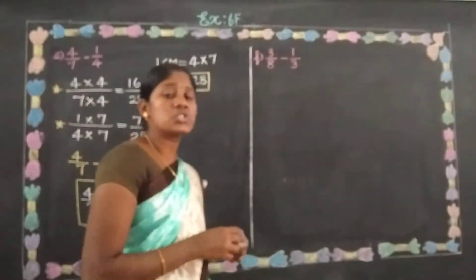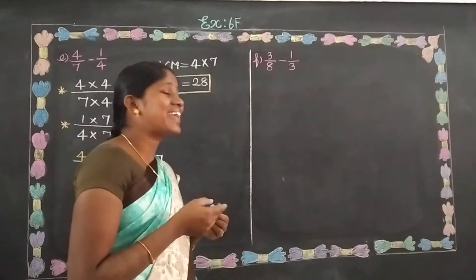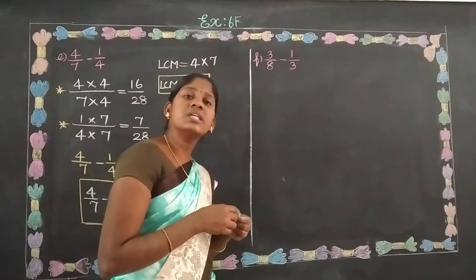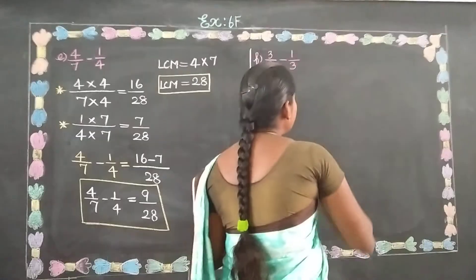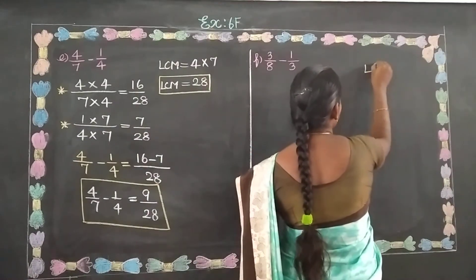And next sum also different denominators, 8 and 3. 8 and 3, same table? No.